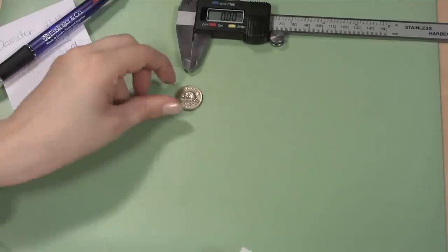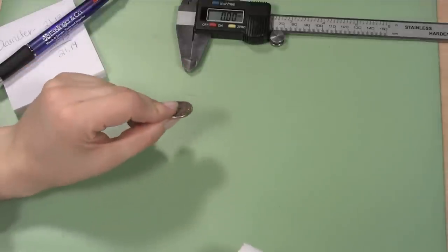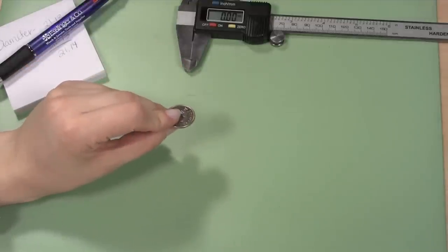Once you have a solid diameter measurement, pick up the coin and hold it between your fingers like this, so you can measure the thickness.